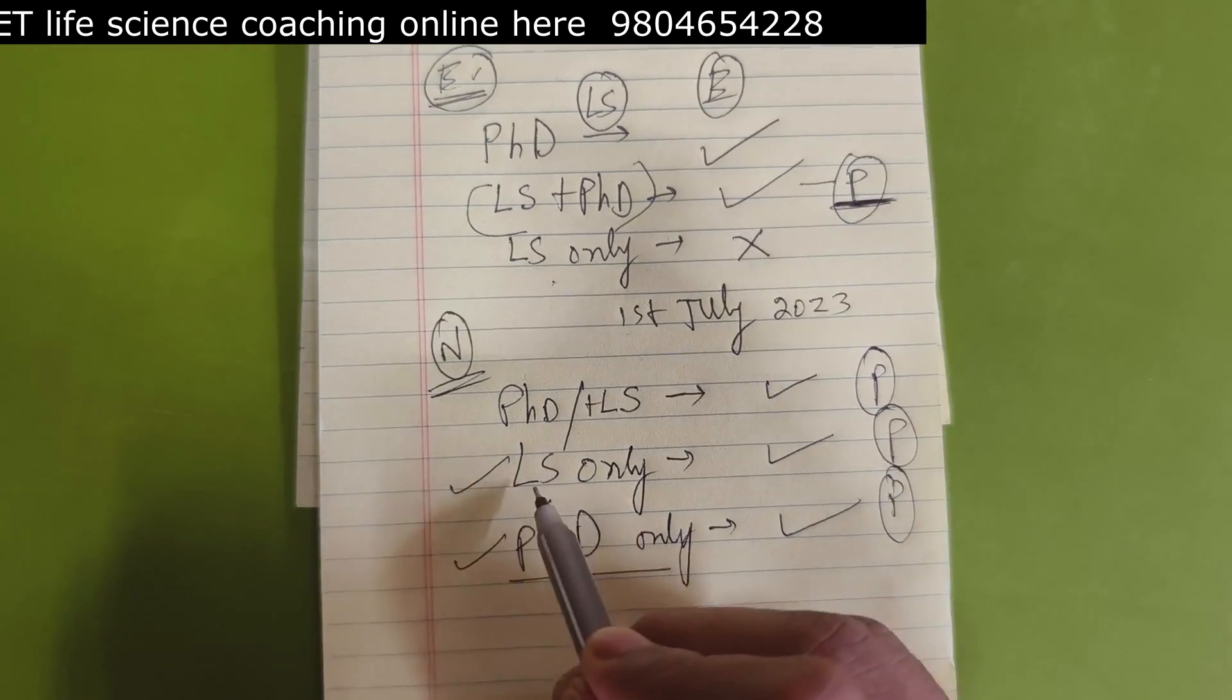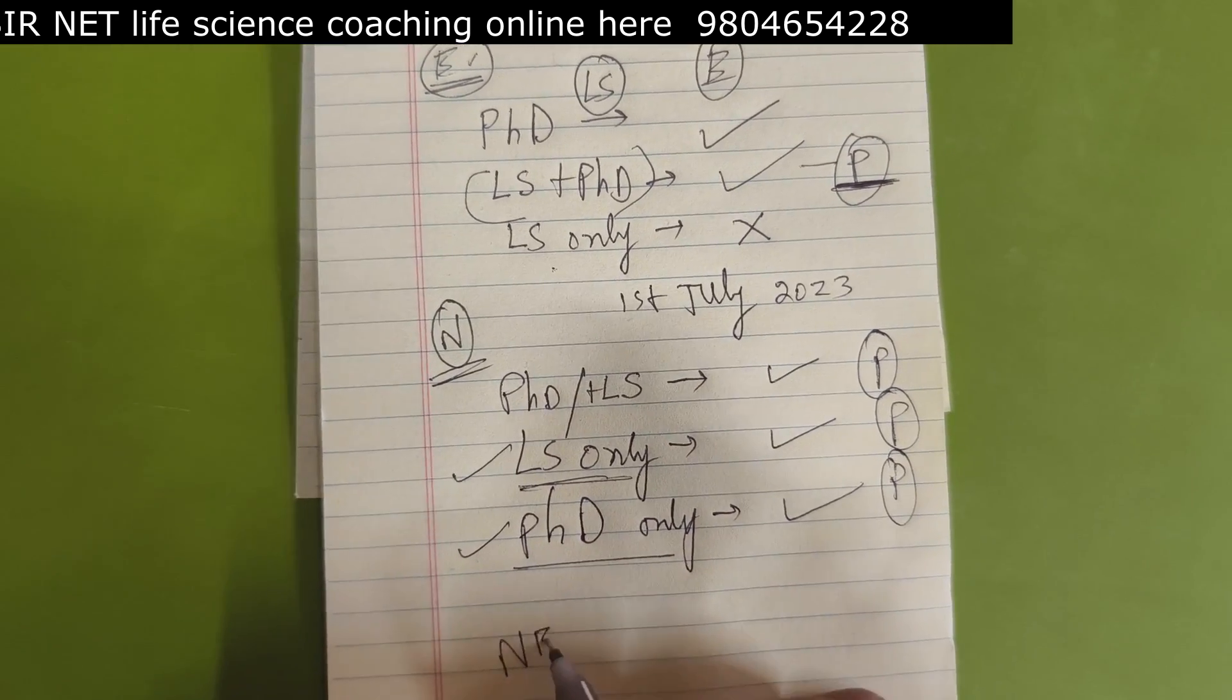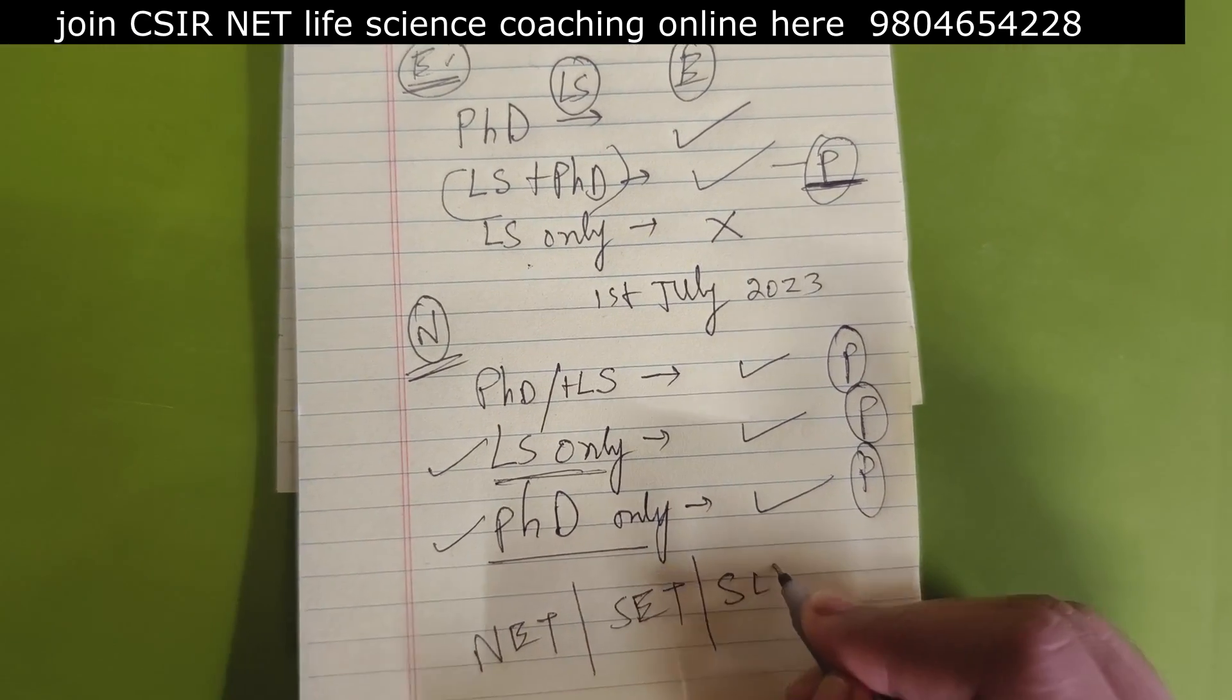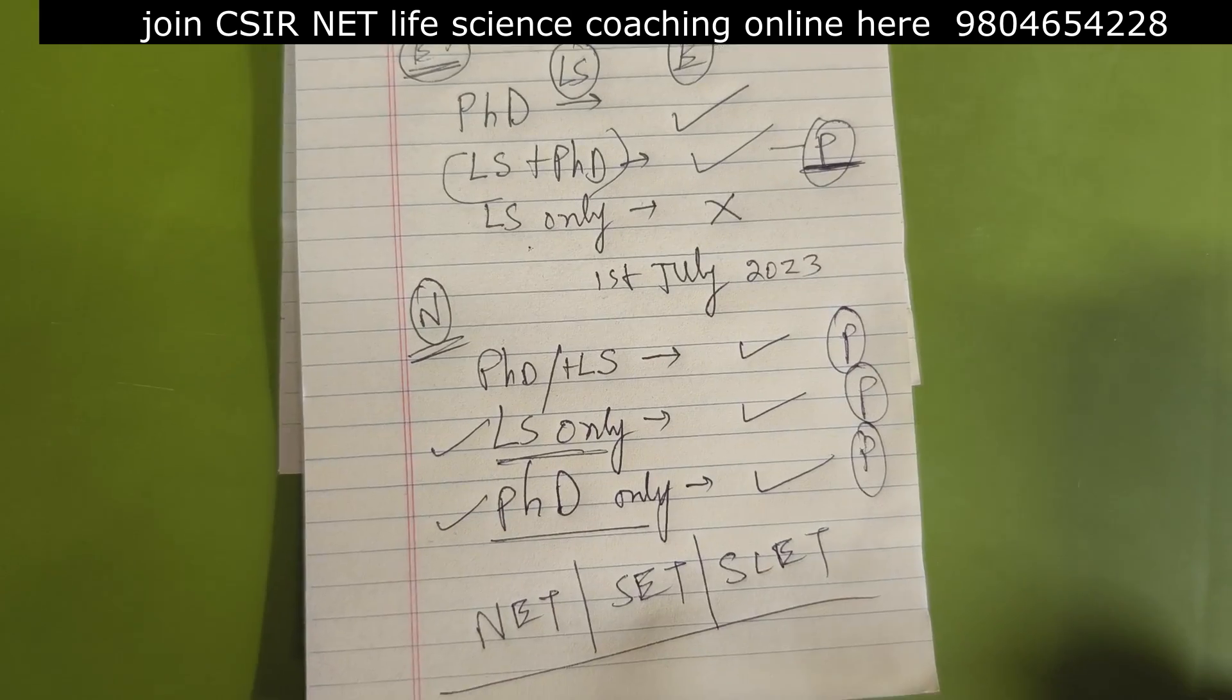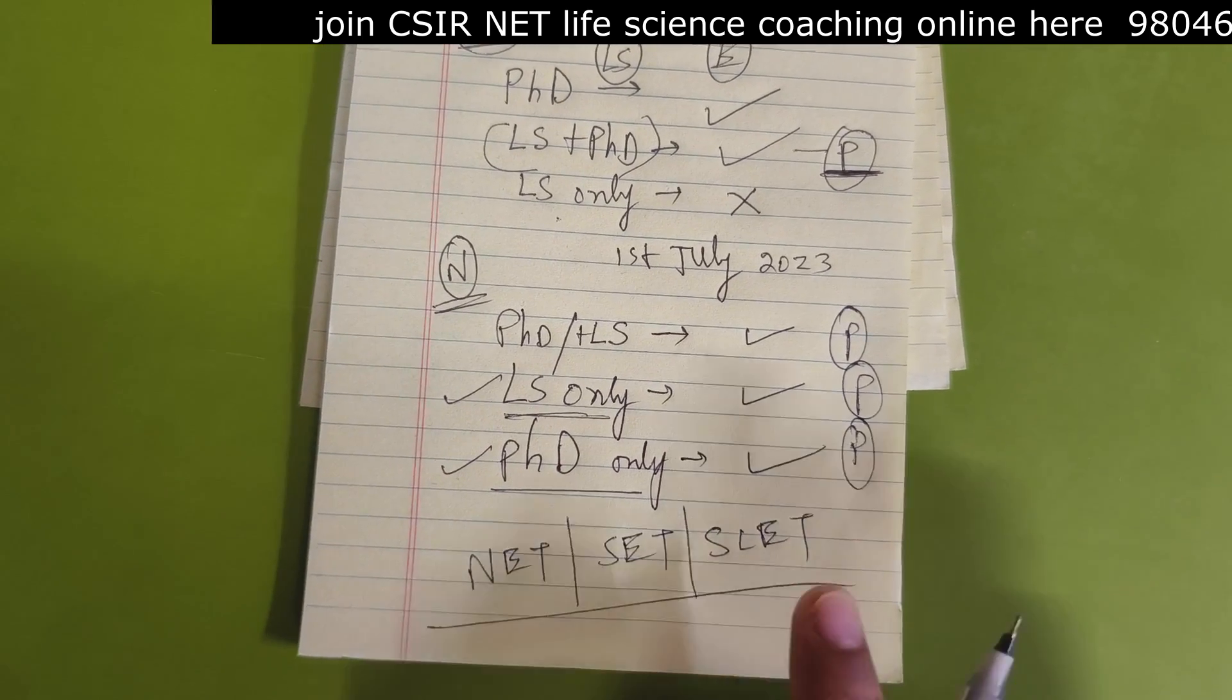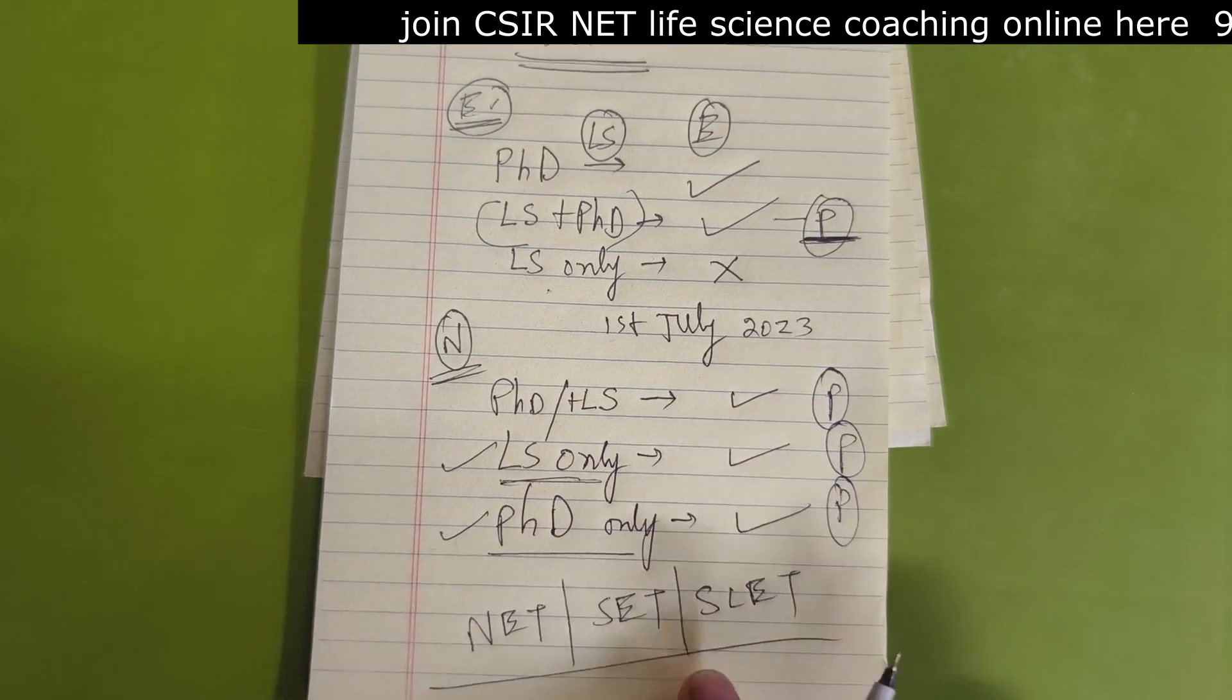So minimum criteria set for LS, that is either NET LS or State Eligibility Test, SET or SLET. Any of these examination certificate holders are eligible as an assistant professor in permanent tenure position for colleges and universities.